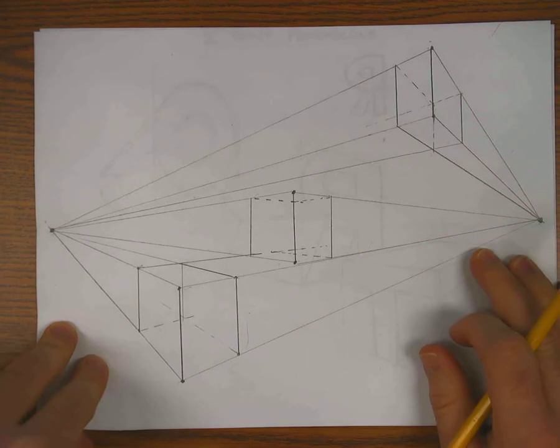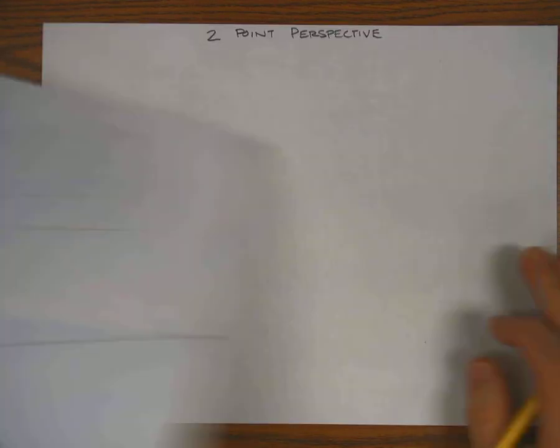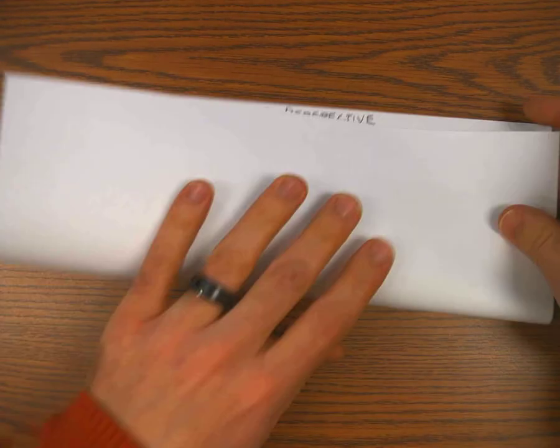And this is our goal for this assignment: three cubes. So we'll start with an empty piece of paper. I wrote 'two-point perspective' on there.